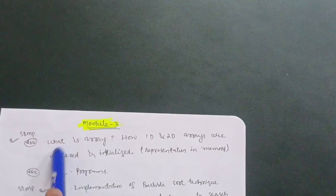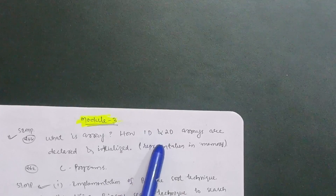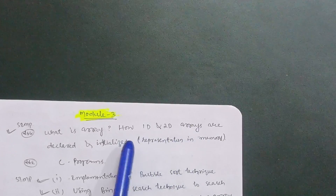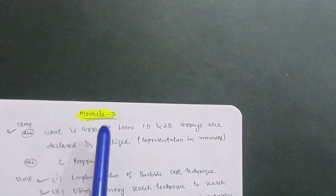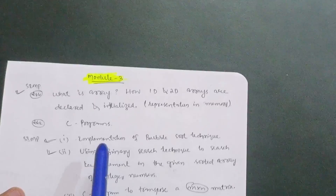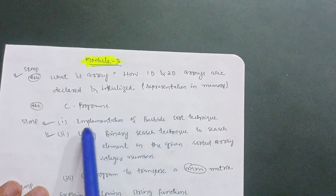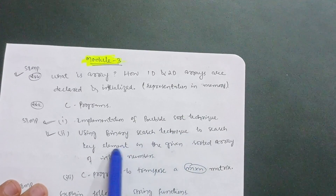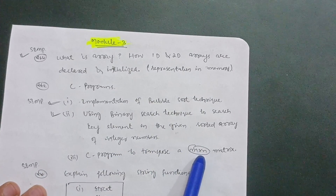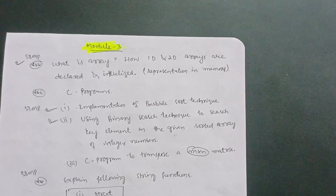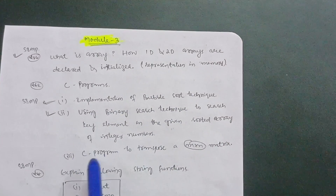In module three, cover these important questions: what is an array, how one-dimensional and two-dimensional arrays are declared and initialized, and how 1D and 2D arrays are represented in memory. The important C programs in this module are: implementation of bubble sort technique, using binary search to search for a key element in a given sorted array of integers, and a C program to transpose an M×N matrix. These are the most frequently asked programs — especially bubble sort, which is super important.